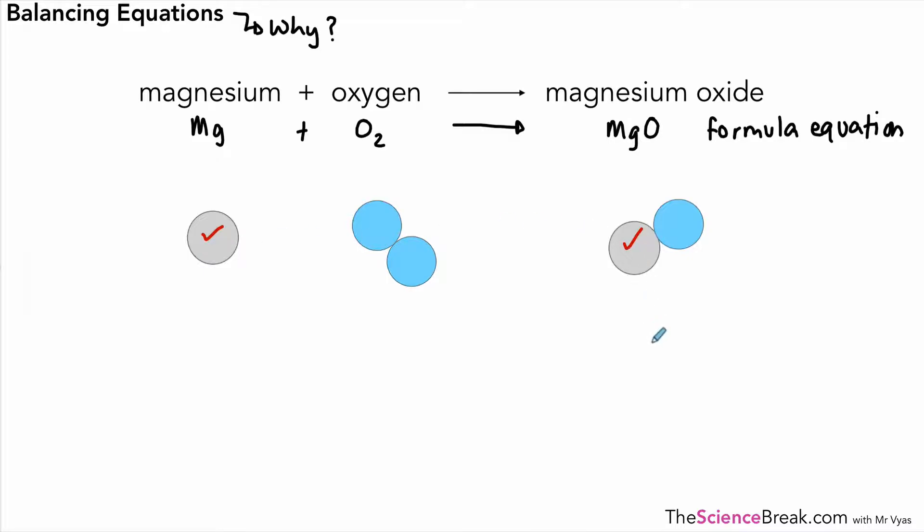But why do we need to balance equations? Well let's have a look at the atoms. Here we've got magnesium and on the right hand side of the arrow we've still got that magnesium. We've got one oxygen on each side of the arrow but the problem is we've got a spare oxygen there. Where did that one go? It can't just disappear. So we've described this as unbalanced as shown by the number of atoms on each side of the arrow. The number of atoms must always be the same.